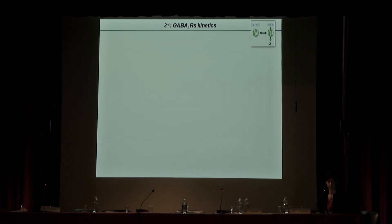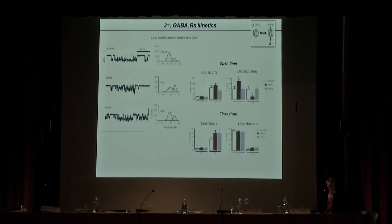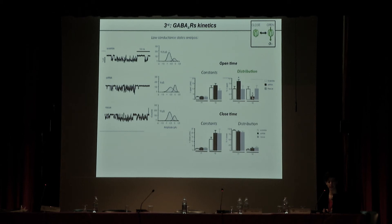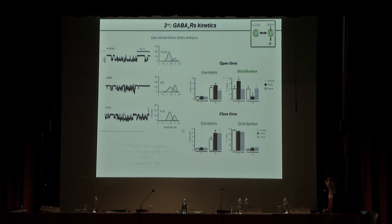What about kinetics? We looked at the opening and closing properties of the channel. We saw a difference in the open time distribution in PCDH-19 down-regulated neurons: a higher proportion of brief openings at the expense of openings with long duration. In other words, when these channels open, they do not stay open for long — they close soon afterwards. The channel is flickering, and this behavior is associated with a reduction of the current that can flow through the receptor.